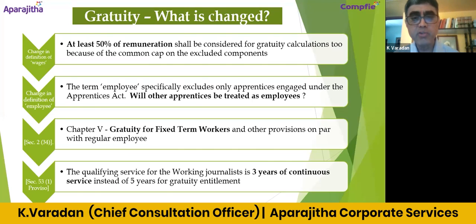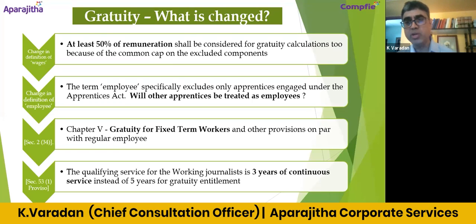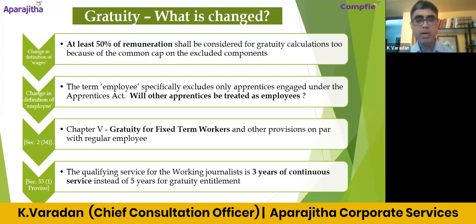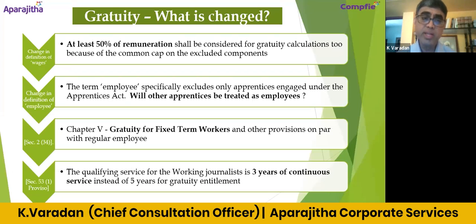In the case of working journalists, the qualifying service for payment of Gratuity is three years, not five. So if a working journalist completes three years of continuous service, that person becomes eligible for payment of Gratuity.